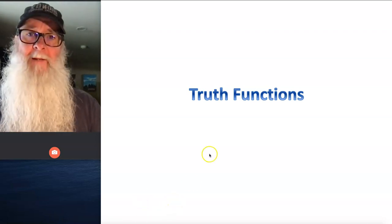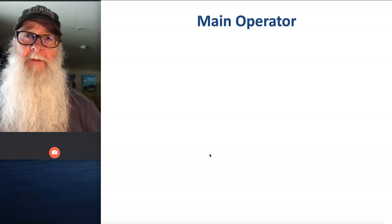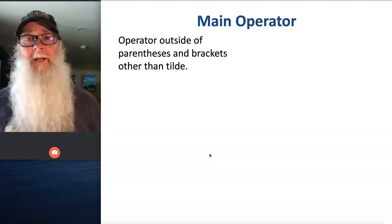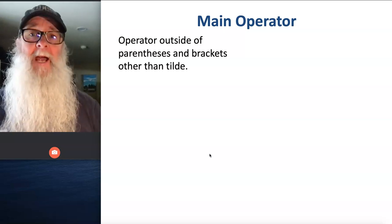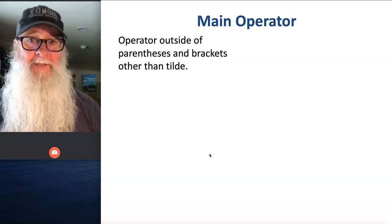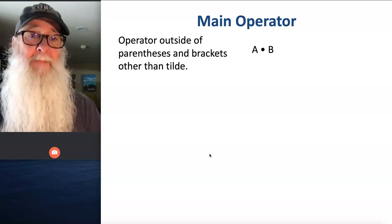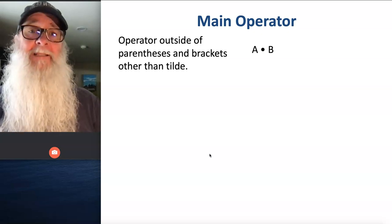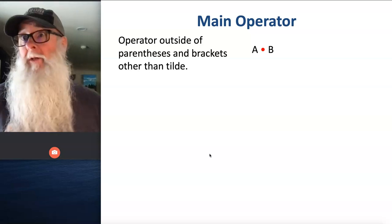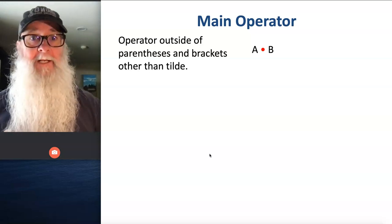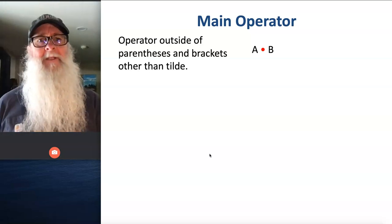Now in every compound proposition, we have what's called the main operator. The main operator of a compound proposition is the operator that's outside of parentheses and brackets, other than tilde. So in the statement A dot B, that dot is the only operator outside of parentheses and brackets, and that operator is the main operator of the statement A dot B.